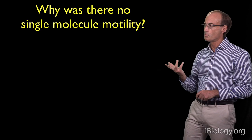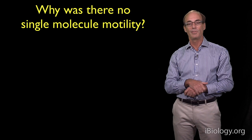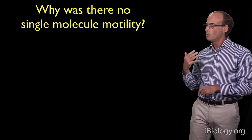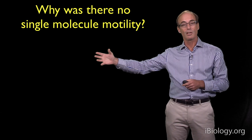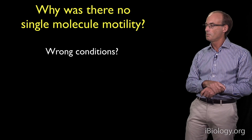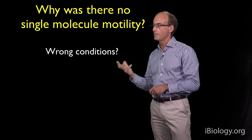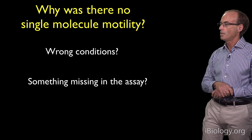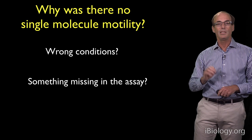So the conundrum was: why didn't we see any single molecule processive motility of the dynein? We saw it in yeast, but we didn't see it in mammalian cells. And we expected the mammalian dynein also to be processive, especially if it's going to carry cargo for long distances inside of cells. When you get a negative result like this, one often has to go back to the drawing board — maybe the conditions for the assay weren't quite right, or maybe we're entirely missing some critical component that dynein needs to move at a single molecule level.